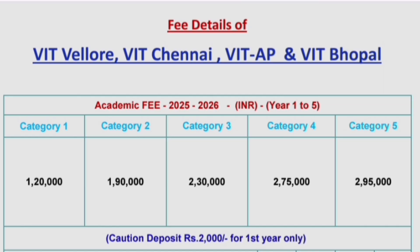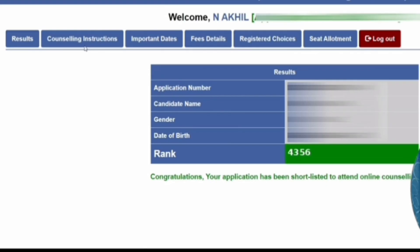Students scoring excellent marks for a particular branch get Category 1, where the fee is 1 lakh 20,000 per year — about 6 lakhs for the five-year program. Category 2 is 1 lakh 90,000 per year, roughly 9.5 lakhs total. Category 3 is 2 lakh 30,000, Category 4 is around 2.75 lakhs per year, and Category 5 is just under 3 lakhs — around 2.95 lakhs per year, totaling close to 15 lakhs. There is also a caution deposit at the start of the first year.